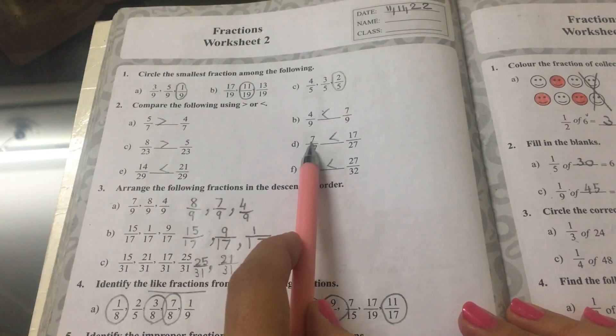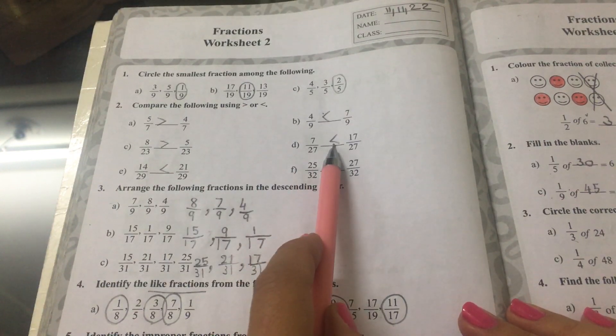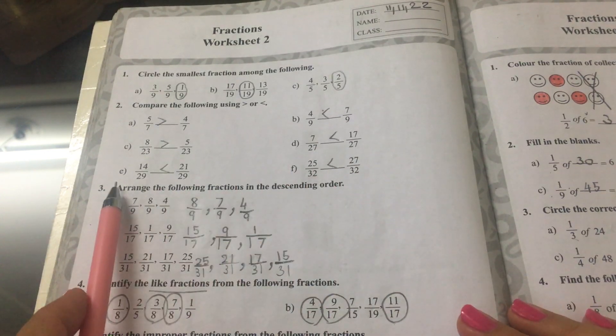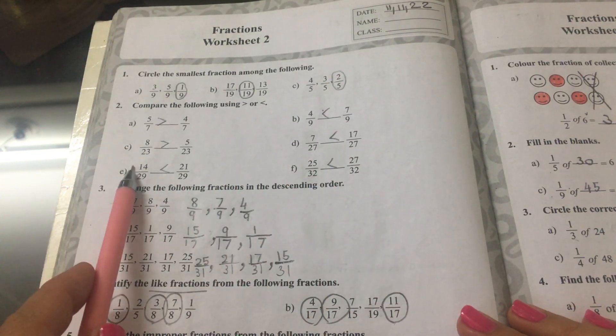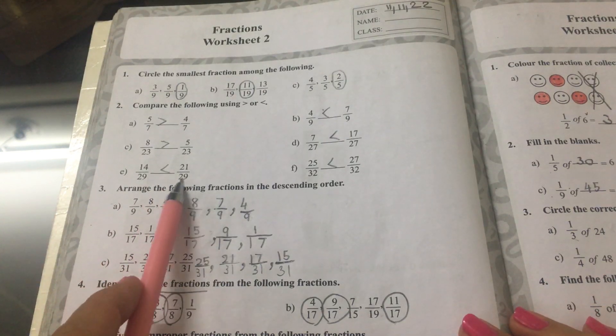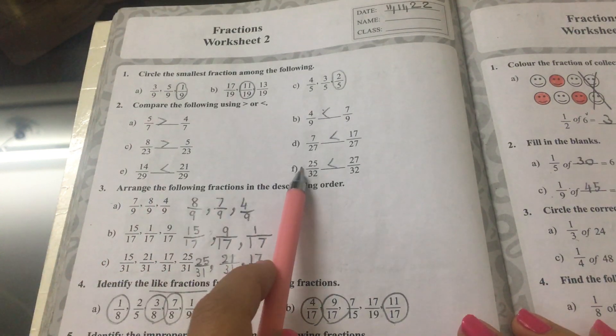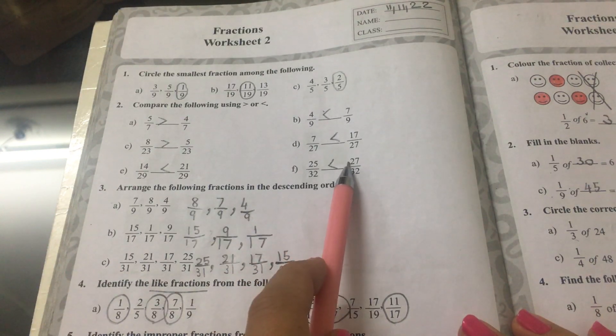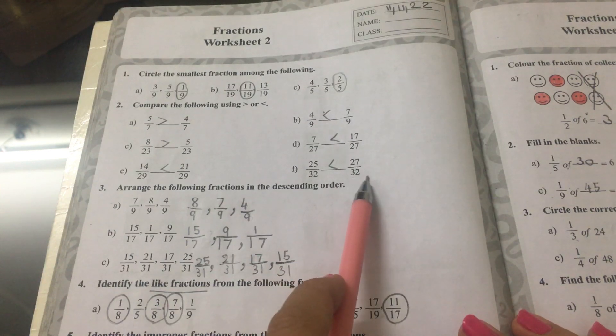D is 7 sevenths smaller than 17 sevenths. E is 24 ninths greater than 20 ninths. F is 2 sixths, 25 thirtieths smaller than 27 thirtieths.